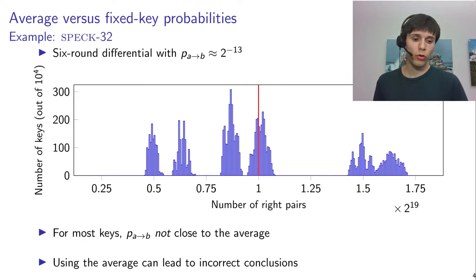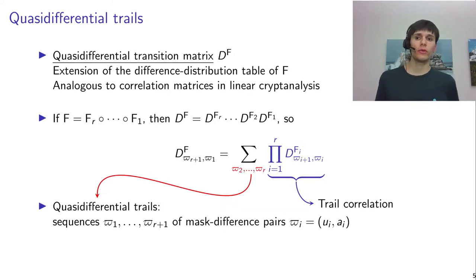So the goal of this paper was essentially to explain figures like this one. And in order to do that we introduce what we call quasi-differential trails. So we do that by first introducing an extension of the difference distribution table known as the quasi-differential transition matrix. And this, if you know linear cryptanalysis, this can be thought of as sort of analogous to correlation matrices that you have there.